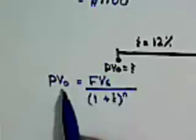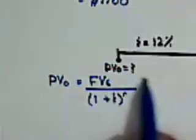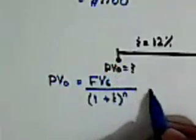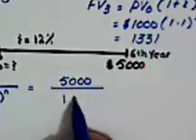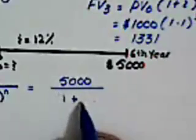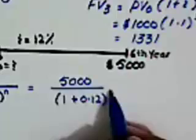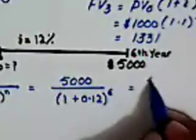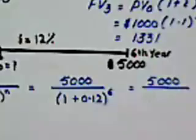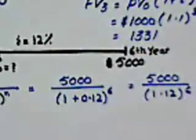Now here when calculating the present value, we do not call this small i the compound annual interest rate — we call it the discount rate, because we are discounting this money back to time zero. So by using this formula: five thousand divided by one plus annual discount rate of twelve percent, that is 0.12, raised to the power six years.